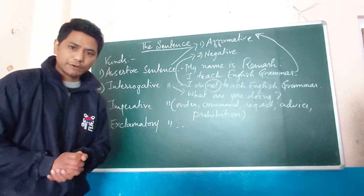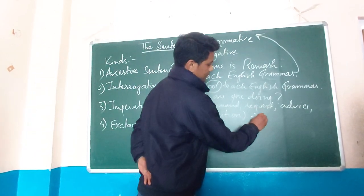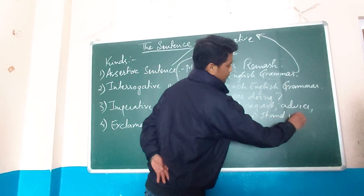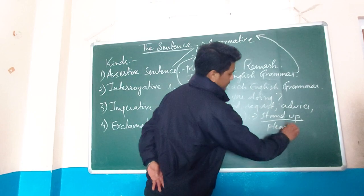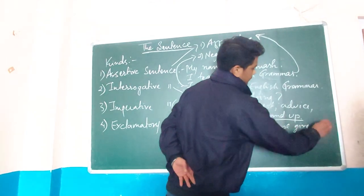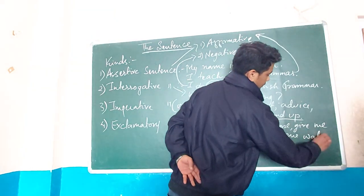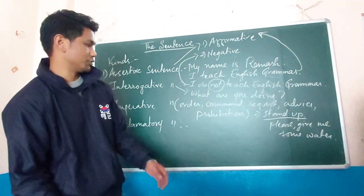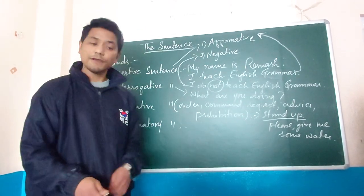Let me write some examples here as well. 'Stand up' — imperative sentence. 'Please give me some water' — imperative sentence. So imperative sentences have order, command, request, advice, and prohibition.